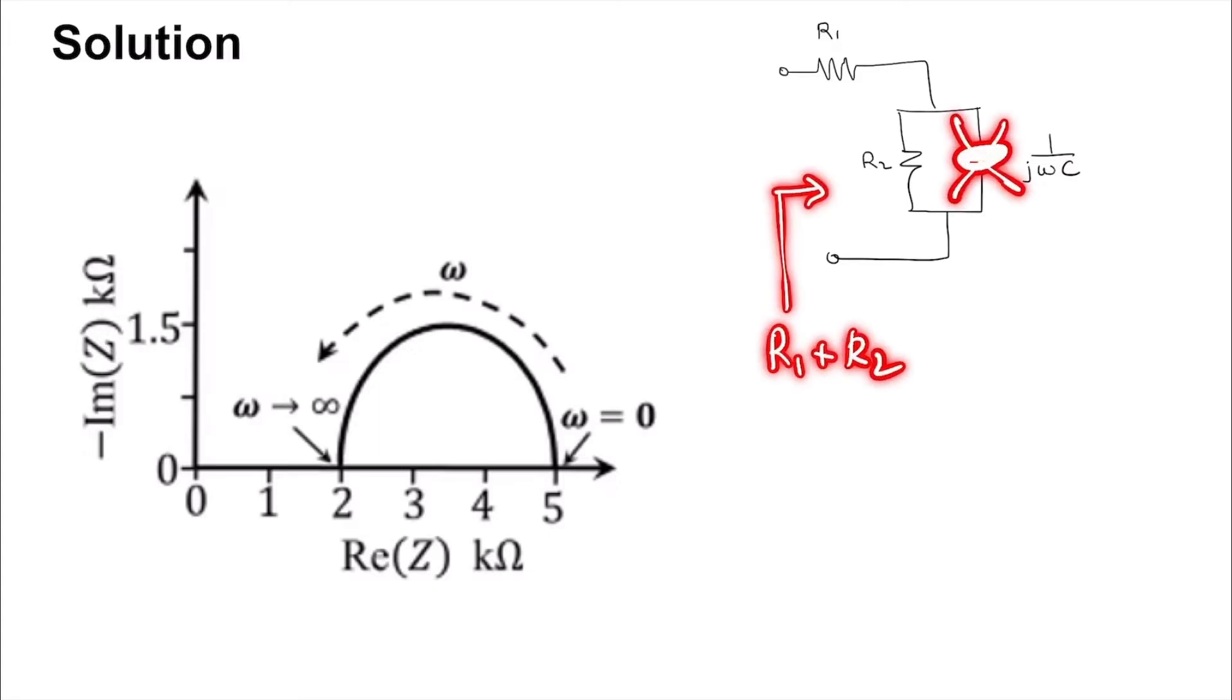So at omega equal to 0, Z is R1 plus R2, which you can see is 5 kilo ohm. That is this point which is 5k plus j times 0k, so it's just a real number on the real axis.